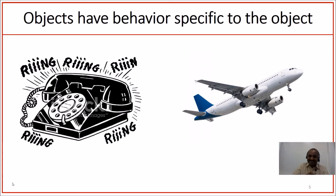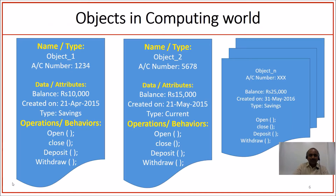The telephone category objects won't fly — they just ring. The aeroplane category objects won't exhibit the same behavior as that of the telephone objects. Bringing the same concept to the computing world, we have a bank account as an object. Each bank account object has a unique identifier called an account number. They have certain data points like what's the balance, when it got created, and what kind of account it is — those are the data or attributes that describe these objects.